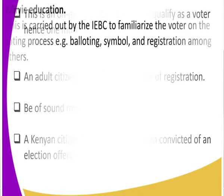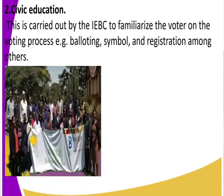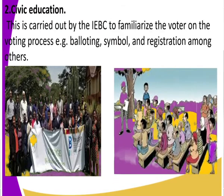The second stage of the electoral process is civic education. The IEBC familiarizes the voter on the voting process — for example, showing a ballot sample, explaining how you need to vote and what you need to carry on voting day. They carry out awareness campaigns for the electorate to familiarize them with the voting process. You can see they have a banner as the IEBC officials educate the people on the electoral process.